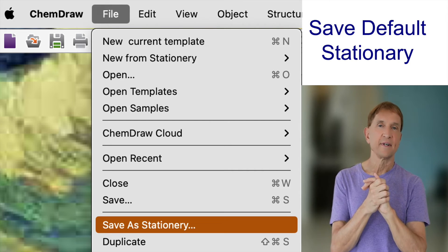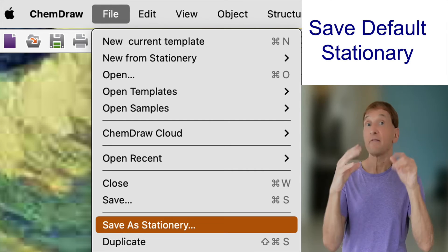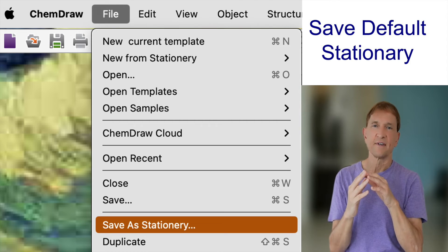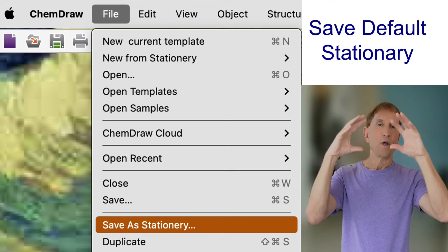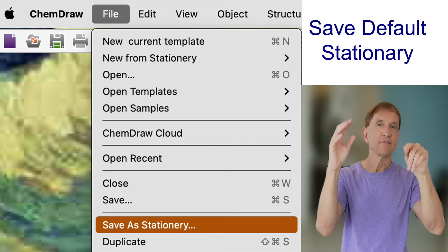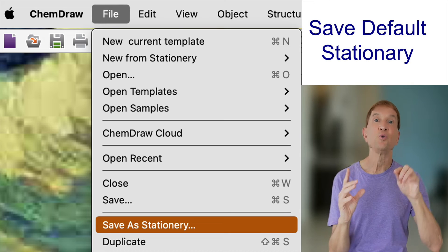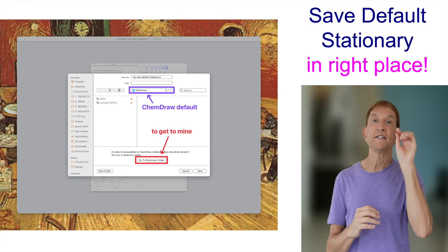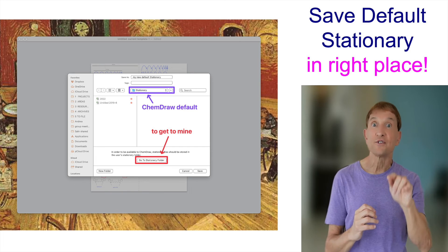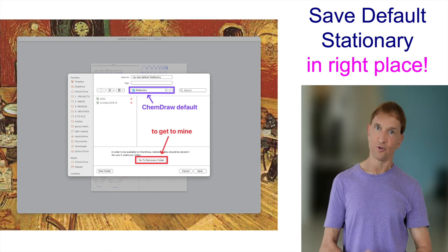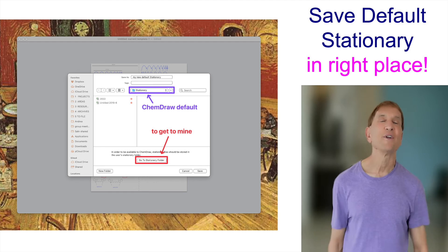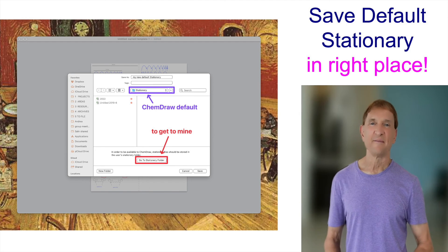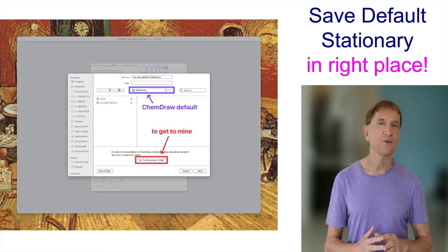It suggests the stationary folder that is the standard one. And if you changed it—you might change it because every time you've upgraded ChemDraw, you don't want to grab things across, that's what I think—so if you change it, you have to navigate to where your stationary folder is and store the default stationary pad in that folder. Of course, if you don't want this one to be your default, don't do this step. But I suggest for a lot of you, it would be good.